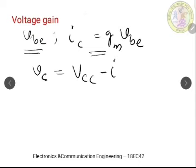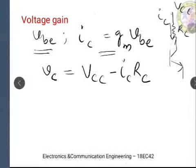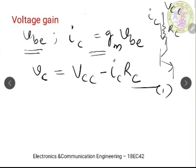The total collector voltage is equal to Vcc minus IC × Rc. This equation is written with reference to the collector part of the circuit. We have Rc, Vcc, and the collector terminal, with the emitter below. Through the collector terminal we have IC flowing. We will take this as Equation 1.